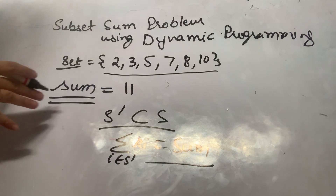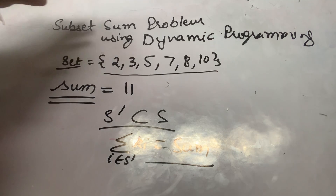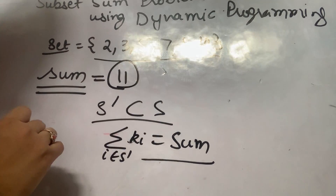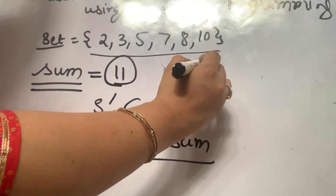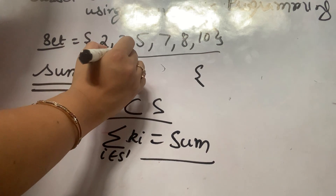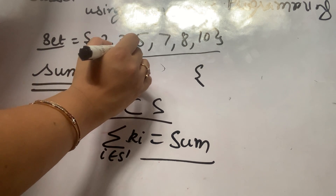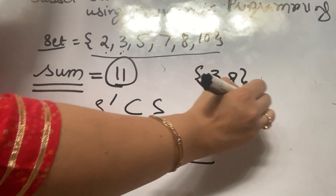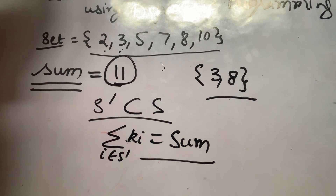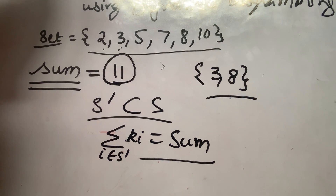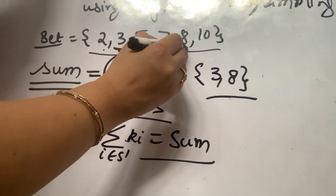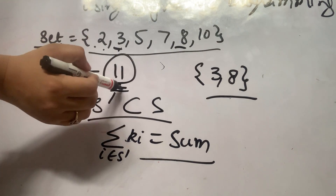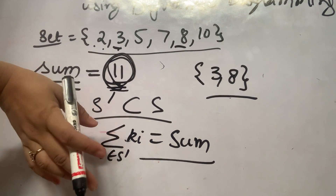For the given example, when I am looking for 11, a possible subset is 3 plus 8, which equals 11. So {3, 8} becomes one possible solution. Finding a subset where you can get a given sum is known as the subset sum problem.